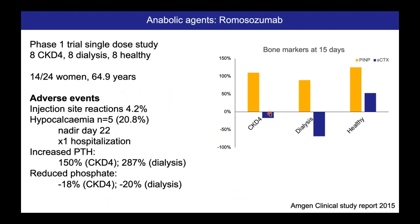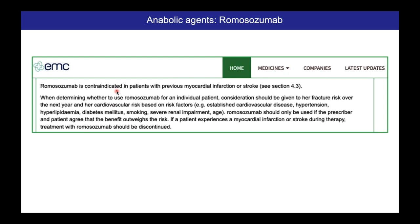What about the new anabolic romosozumab? There is only one study - not published, on the AMGEN clinical study site - a single phase one study of 8 patients with CKD4, 8 dialysis patients, and 8 healthy controls. Even in CKD4 and dialysis patients, there was still an anabolic response to romosozumab with a reduction in resorption markers, though not as large as in the healthy population. Hypocalcemia was common in 20%, with one hospitalization. There was an increase in hyperparathyroidism, most marked in the dialysis population, but also a reduction in phosphate. The real issue for using romosozumab is cardiovascular risk, which is listed as a really important risk factor when addressing the risk-benefit ratio.